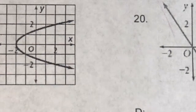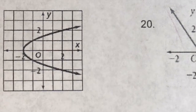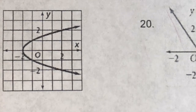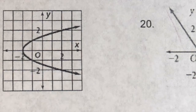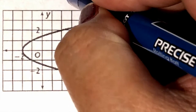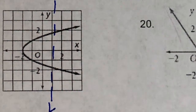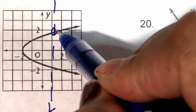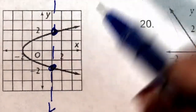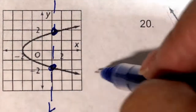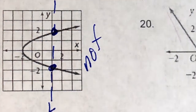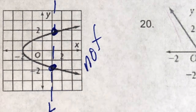Last example. Is this graph a relation or a function? Of course it is a relation, but is it a function? Let us use a vertical line test. This line crosses the graph at exactly two points. Therefore, this is not a function.